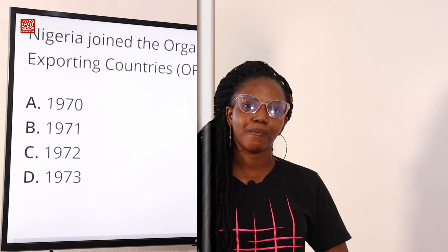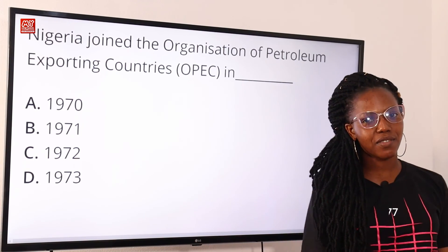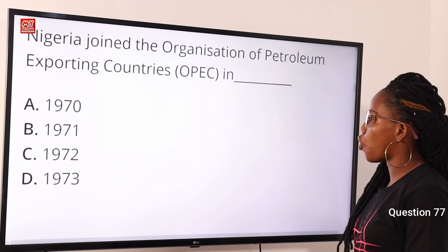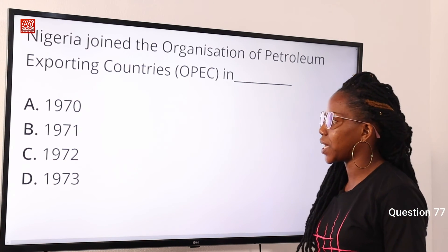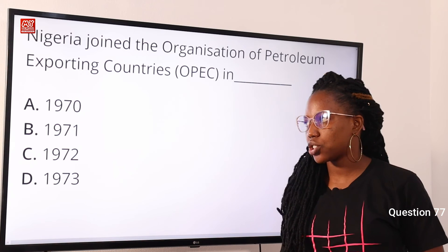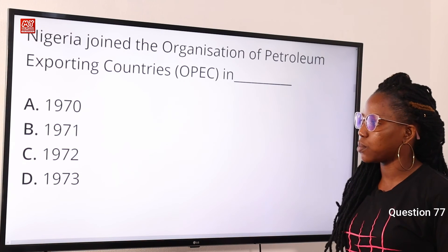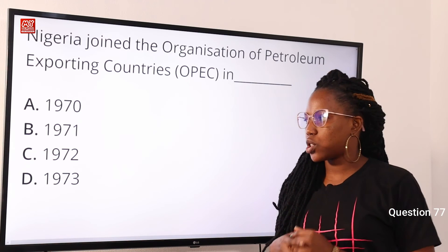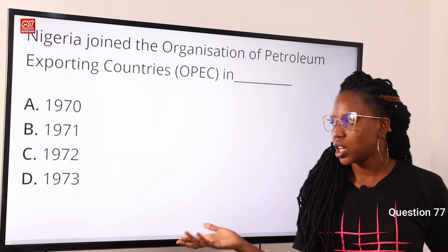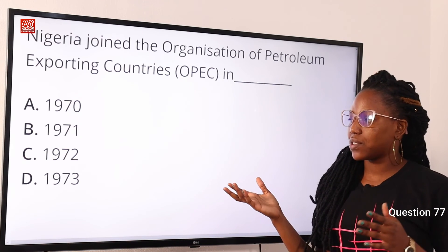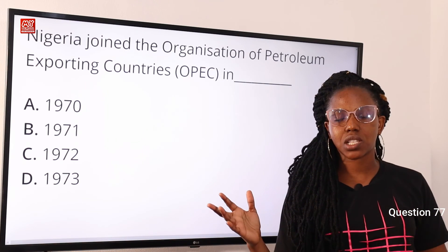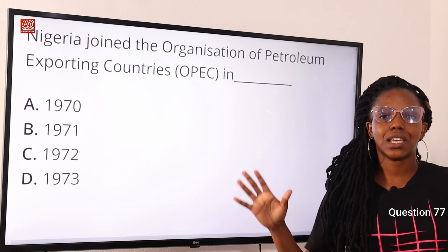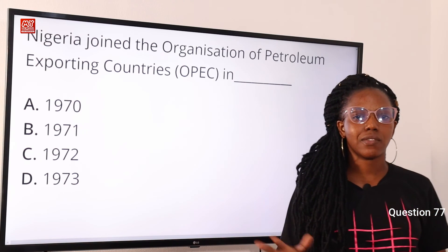Question 77: Nigeria joined the Organization of Petroleum Exporting Countries, OPEC, in — option A, 1970; option B, 1971; option C, 1972; option D, 1973. The answer is option B, 1971. Nigeria joined OPEC in the year 1971.